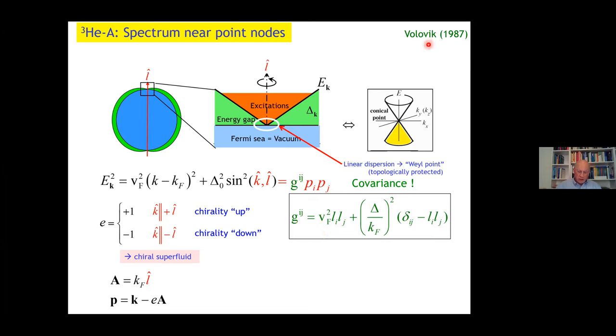Interestingly, and counter-intuitively, at low energies, superfluid helium-3 shows a larger symmetry group, namely full Lorentz invariance. It's a chiral relativistic Fermi system.